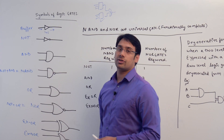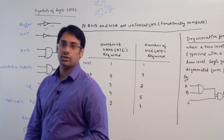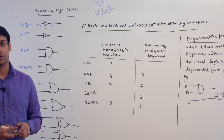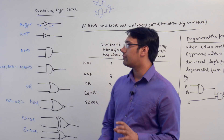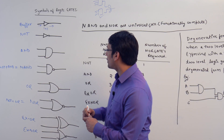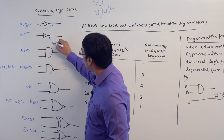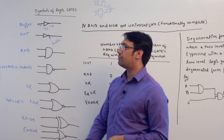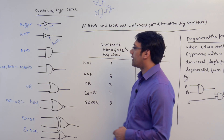The NOT gate is used to produce the logical NOT, or complement, of a given variable or function. We already know what a NOT gate is. In the NOT gate, this small bubble represents a NOT. So whenever in a buffer gate you add a small bubble, it denotes a NOT gate.